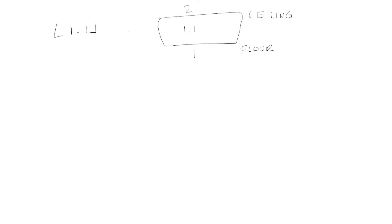So the floor of 1.1 will be 1 and the ceiling would be 2. The ceiling will be like this — that's 2.